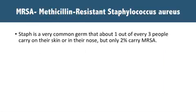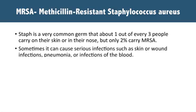Staphylococcus aureus, or Staph, is a very common germ that about one out of every three people has on their skin or in their nose, but only 2% of those carry MRSA. This germ does not cause any problems for most people who have it on their skin, but sometimes it can cause serious infections, such as skin or wound infections, pneumonia, or infections in the blood.